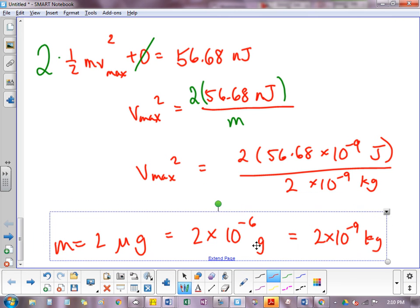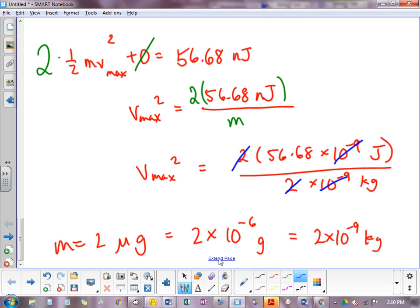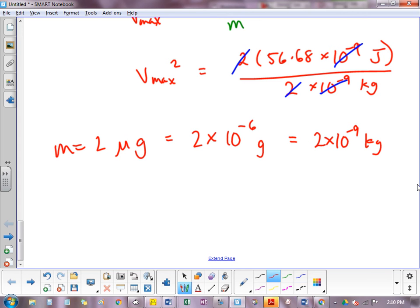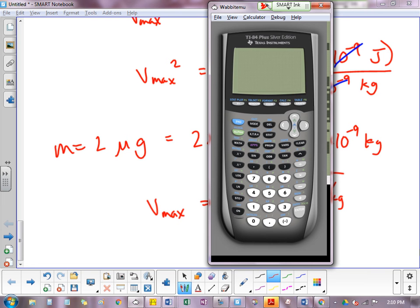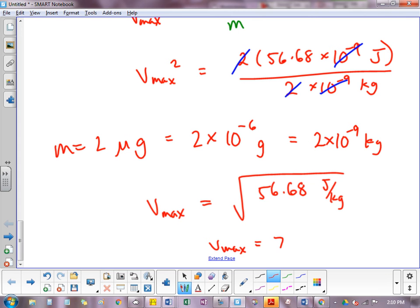The 10 to the negative ninth cancels out. You just basically get 56.68 joules per kilogram. It's a velocity squared. So we're going to square root. Square root of 56.68 joules per kg. So V max is 7.529. And if you've been careful with units to use joules and kgs and volts and all the right mks units, this should represent meters per second.